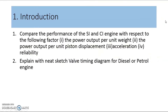Unit one is Introductions. Especially in the new syllabus, the content given in unit number one is comparisons between SI and CI engines based on various aspects. In the practical portions, the valve timing diagram is also given. The most important questions from this chapter are: comparisons between SI and CI engines on different aspects, and the valve timing diagram for petrol as well as diesel engine, for four-stroke as well as two-stroke engines. So these are the two important questions from unit number one.